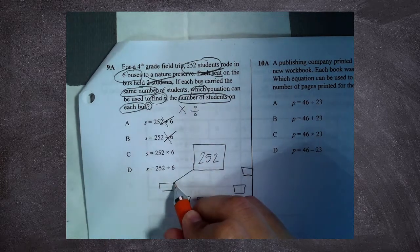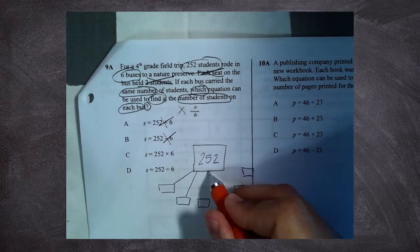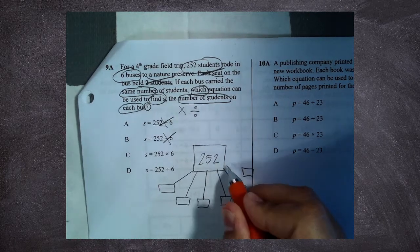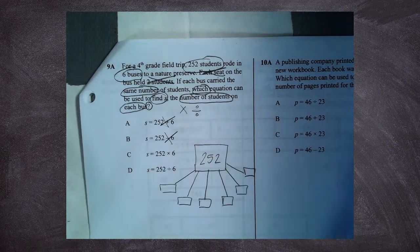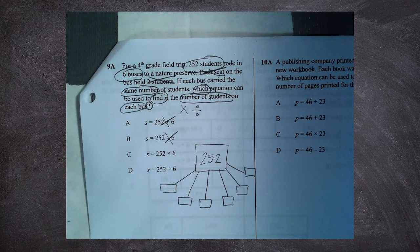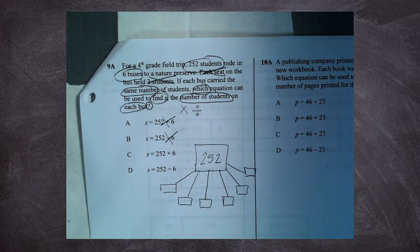Some students get on bus one, some on bus two, some on bus three, some on bus four, some on bus five, some on bus six. So as they're getting on these buses, am I going to end up with more students? Is my number going to go up, or is the number going to go down?